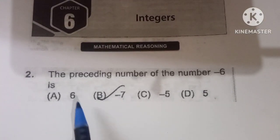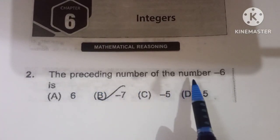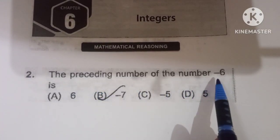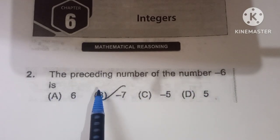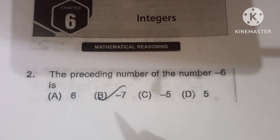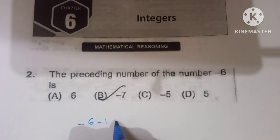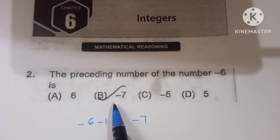Second question: the preceding number of minus 6 on the number line. Preceding means the number before. So minus 6 minus 1, which is minus 7. So option B is the correct one.